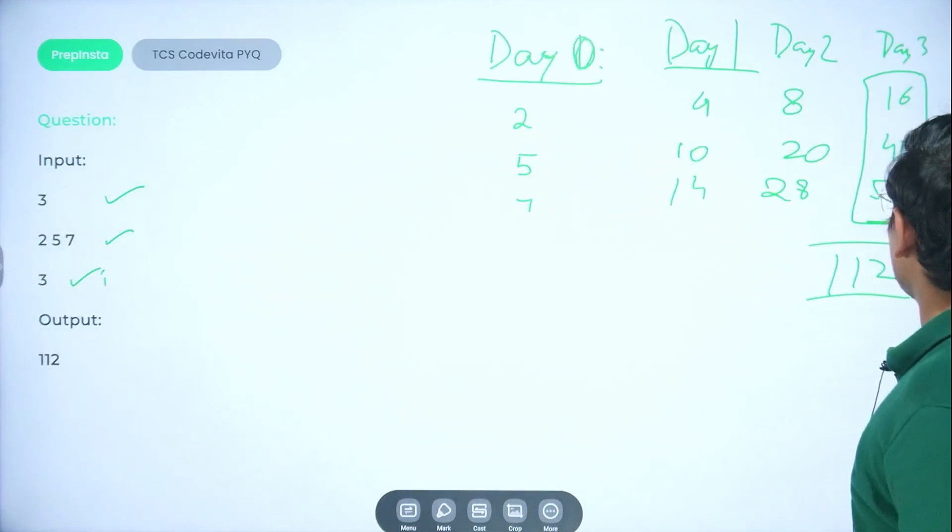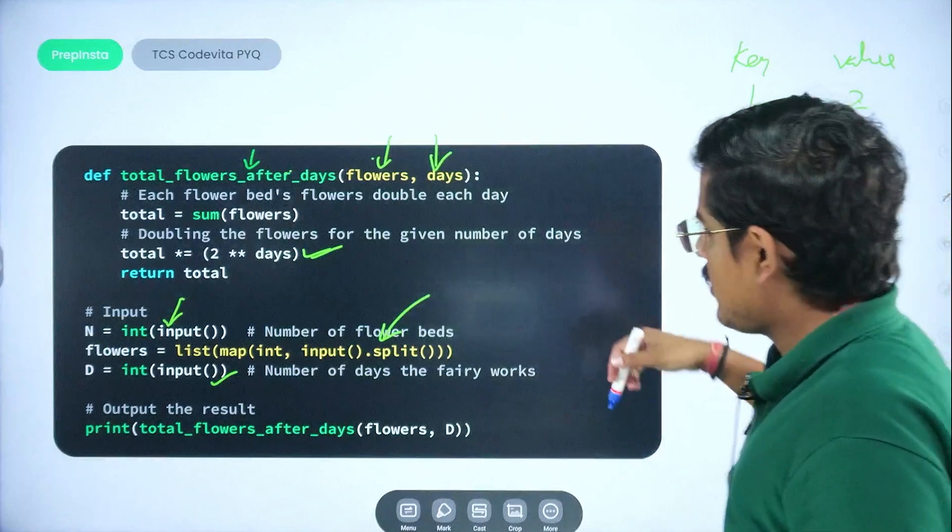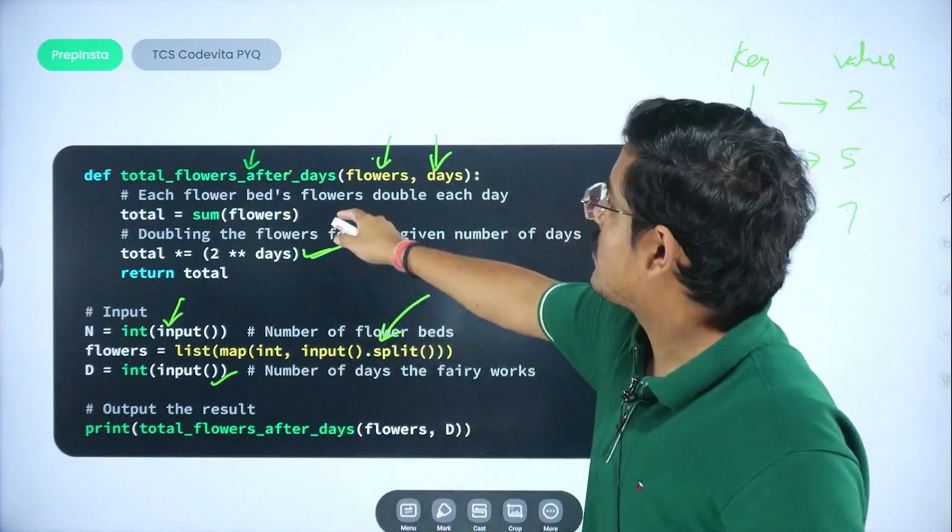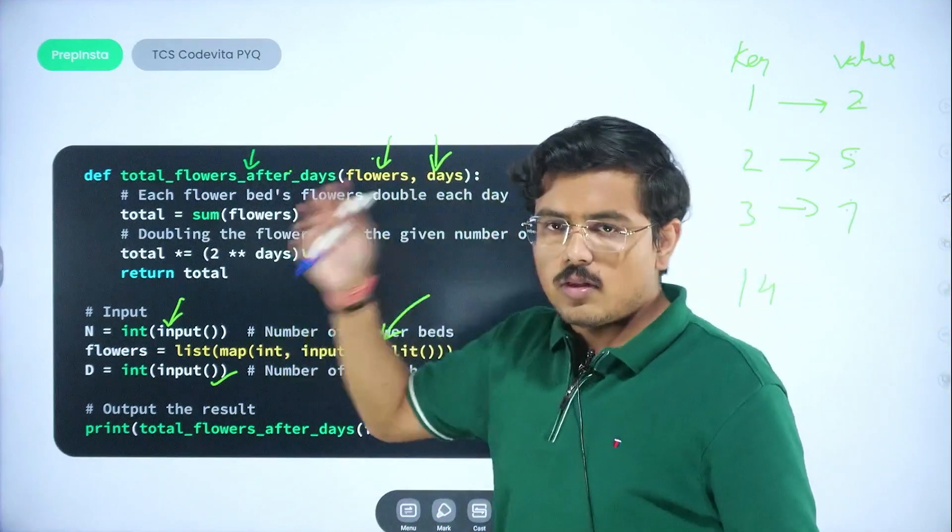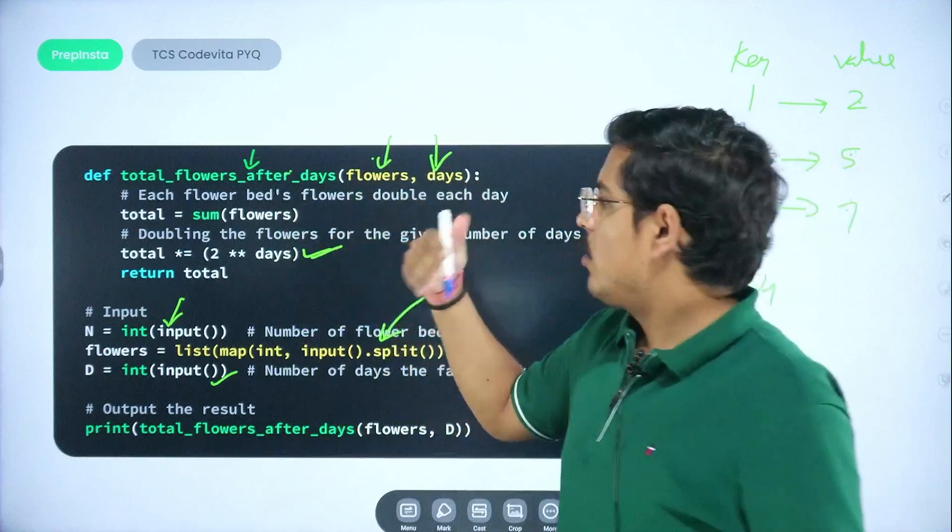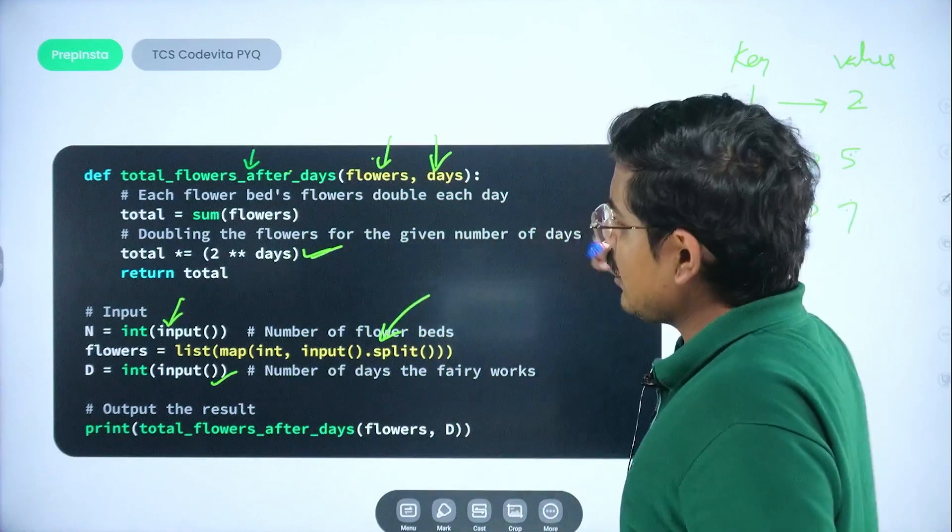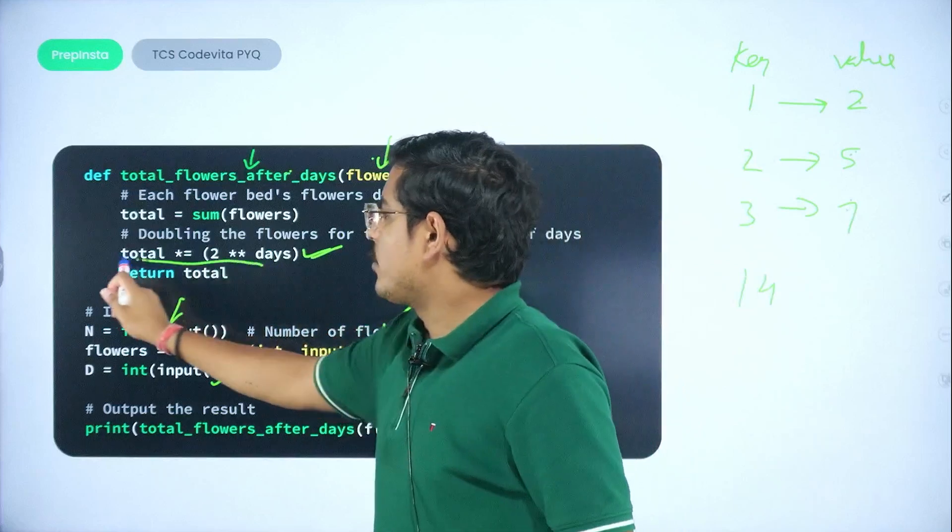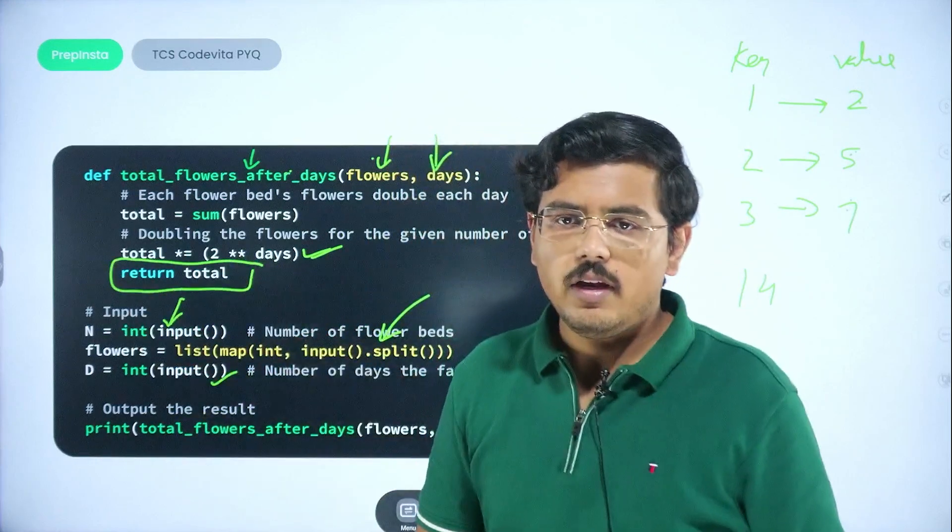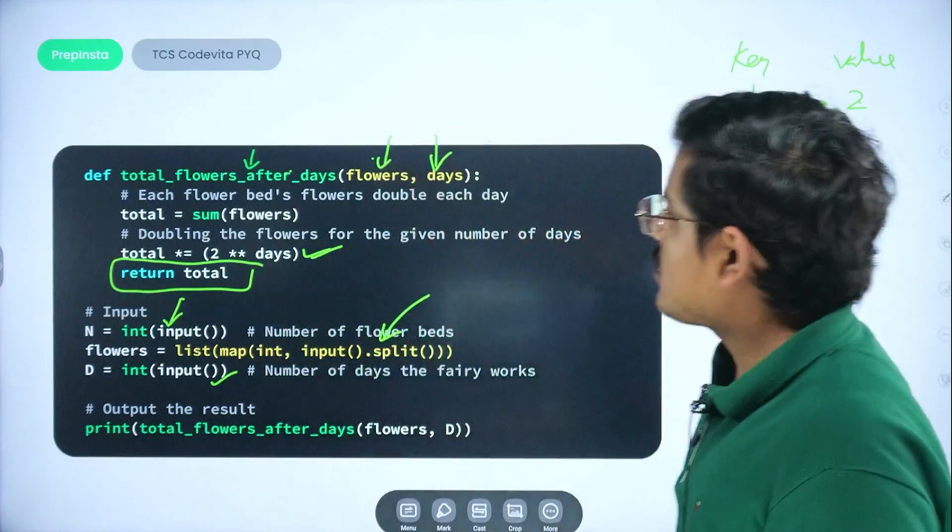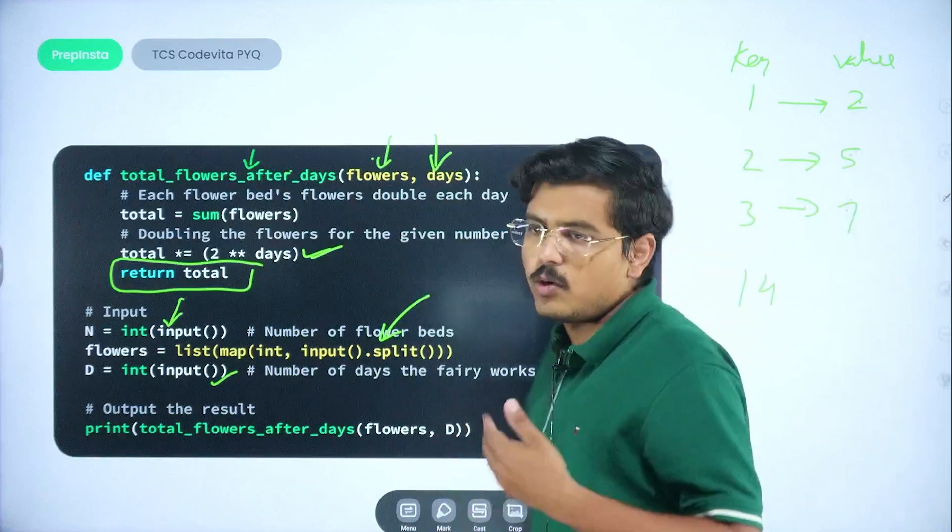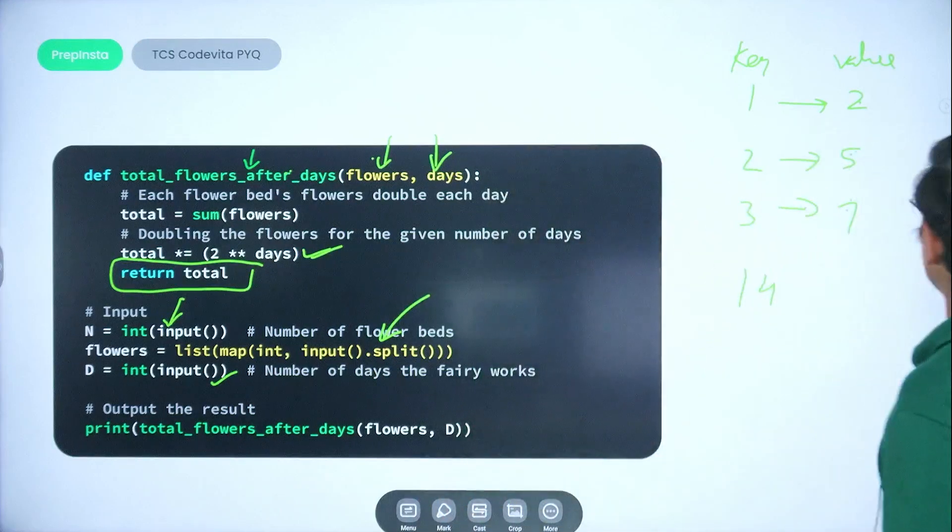So it would simply do the same thing which we were doing here actually. And it would keep on doubling. Once the doubling happens, each flower bed's flowers double each day. So that particular total would be increasing day by day. Once it improves, you go ahead and you return the total. So all you are trying to do is you actually provide total the same thing that I have shown you here.